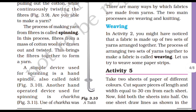First, we will talk about weaving. In Activity 2, you might have noticed that the fabric is made from two sets of yarn — one in the upper direction and one in the lower direction. This process of arranging two sets of yarn is called weaving.